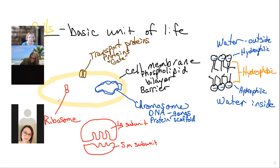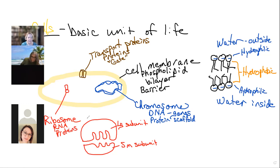Ribosomes are composed of RNA — RNA is a cousin to DNA — and they also have proteins. Ribosomes synthesize or make proteins.